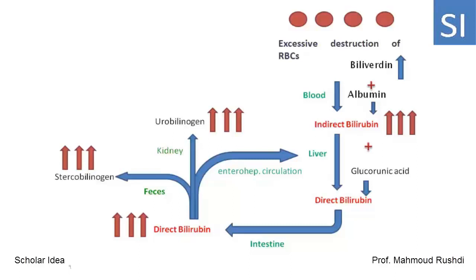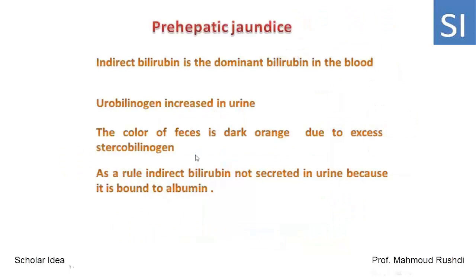In pre-hepatic jaundice: First, the dominant bilirubin in the blood circulation is the unconjugated bilirubin, though direct bilirubin is also increased. Second, the color of feces becomes dark brown to orange due to increased stercobilinogen in the feces. Also, pre-hepatic jaundice is characterized by a higher level of urobilinogen in the urine. As a rule, indirect bilirubin is not secreted in urine because it is bound to albumin.